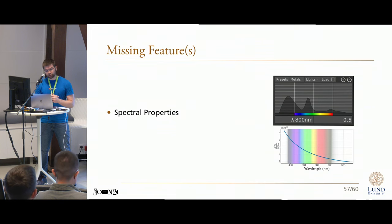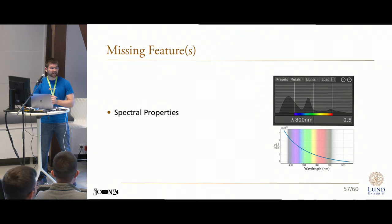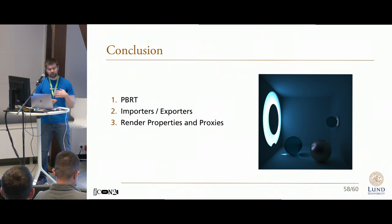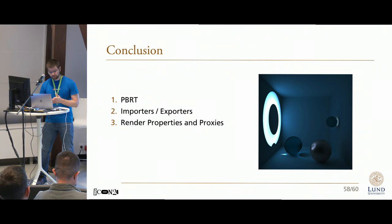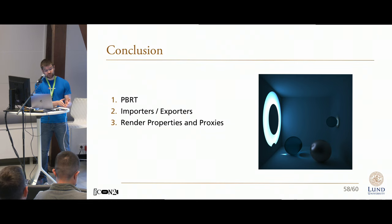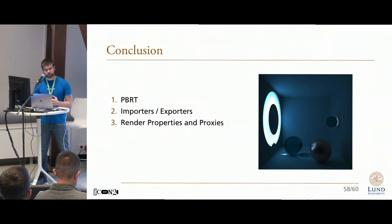But that is really just me musing on what would be nice for working with spectral properties in Blender — not an actual suggestion given the complexity of adding support for something like that. Which brings me to the end of this talk. To quickly summarize: I have talked about PBRT, what it is and what kind of renderings it can do along with its file format, and briefly shown how to create custom importers and exporters for Blender using PBRT as an example, as well as how to add rendering properties to influence these, and how to use proxy objects to represent various types of PBRT objects.